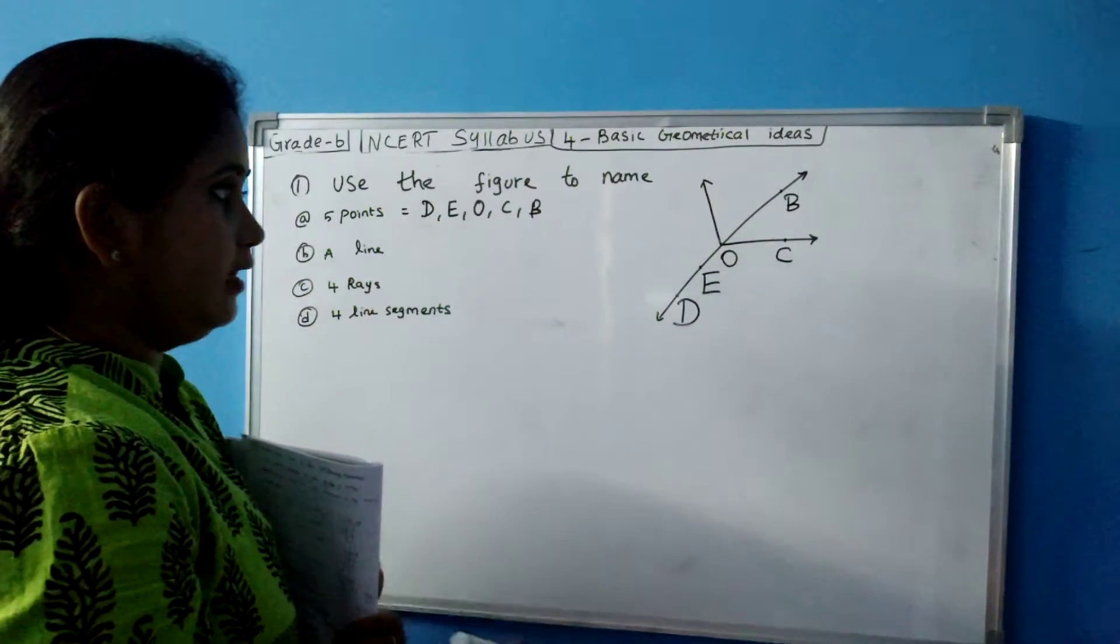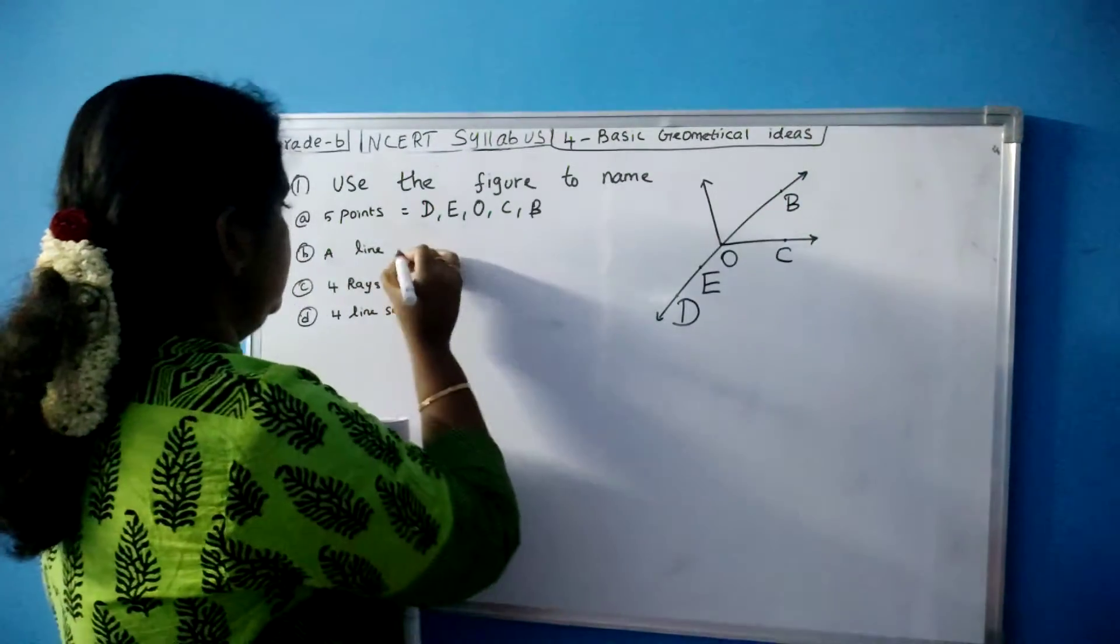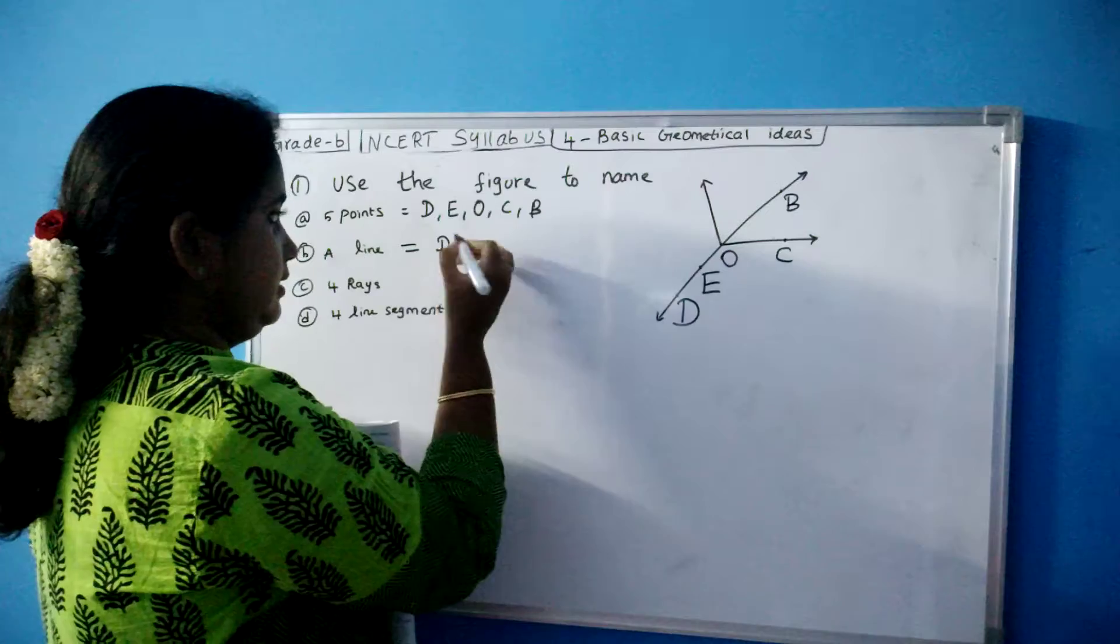Next, a line. Can you name a line? D and B is a line, right? So you can write DB is a line.